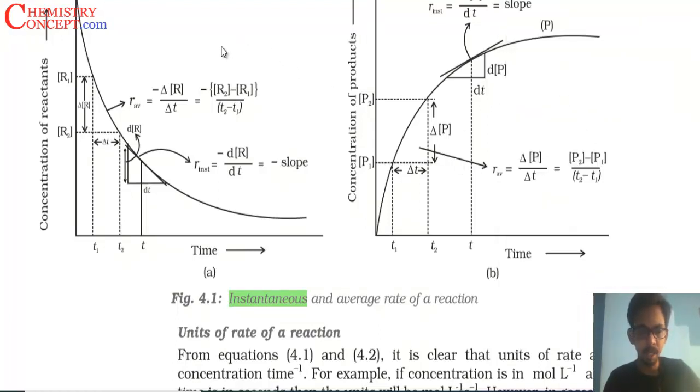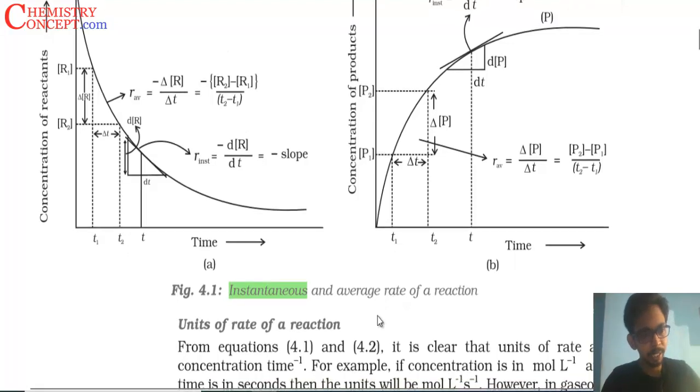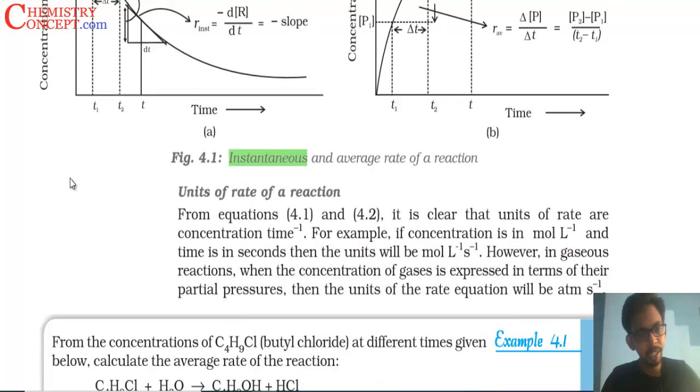Now what is the unit of rate of a reaction? Rate of reaction is change in concentration of reactant upon change in time. Concentration unit is mole per liter. Time unit is second. So it becomes mole per liter per second.